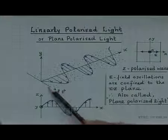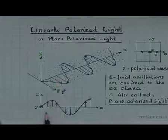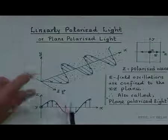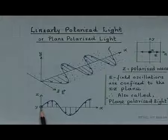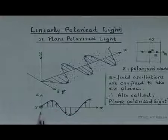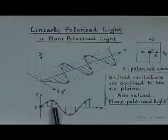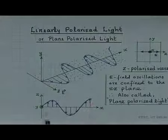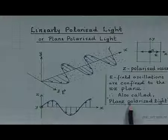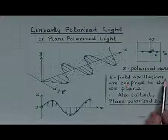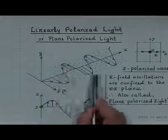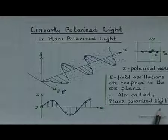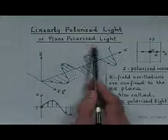The electric field is confined to the x-z plane. The dotted plane represents the x-z plane. Therefore, linearly polarized light is also called plane polarized light. The E-field oscillations are confined to the x-z plane in this wave. Linearly polarized and plane polarized mean the same thing.